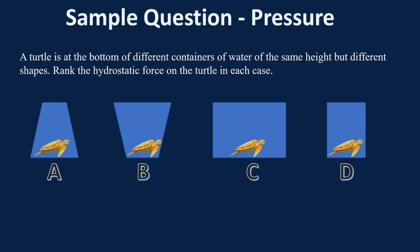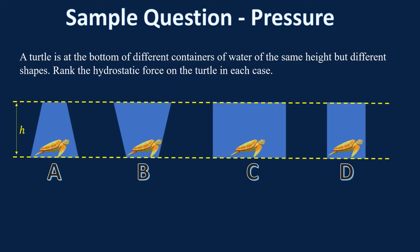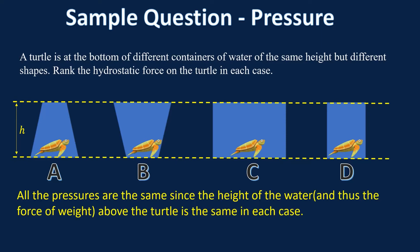Here's a pretty common AP Physics question: you have a bunch of different container shapes, all with the same height, but different shapes, with a turtle at the bottom of each. Rank the hydrostatic force in each case. Don't think too hard about this one. In each case, the turtle has the same height h of water above it, so it has the same weight of water above it. The pressures are all the same because the height of the water is the same — same force, same area, same pressure in all four cases.